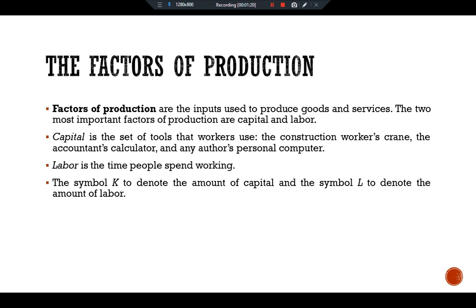We take the economy's production function as given. In other words, we assume that the economy has a fixed amount of capital and a fixed amount of labor. So we write K equals K prime and L equals L prime. The overbar or prime means that each variable is fixed at some level. In other videos, we will examine what happens when the factors of production change over time as they do in the real world. For now, to keep our analysis simple, we assume fixed amounts of capital and labor.